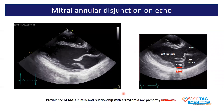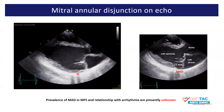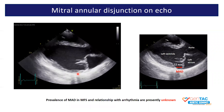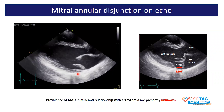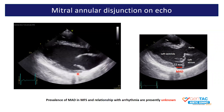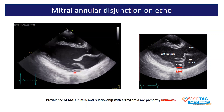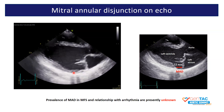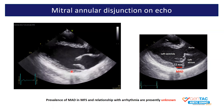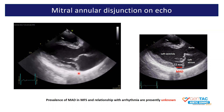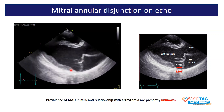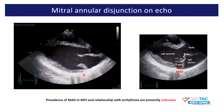As you can see here, mitral annular disjunction can be detected by echocardiography by carefully inspecting the mitral valve annulus. As the ventricle contracts, I'm sure you can appreciate the left ventricular myocardial free wall separating from the mitral annulus and sliding underneath it in a curling motion.